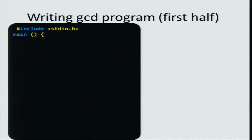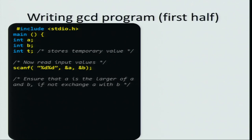We have to do a few preliminary things — let us call it the first half of the program. In the first half, I declare three variables: a, b, and another variable t whose need we will see shortly. Let us just take it on faith that we need an extra variable. What I will do is scan two variables a and b.